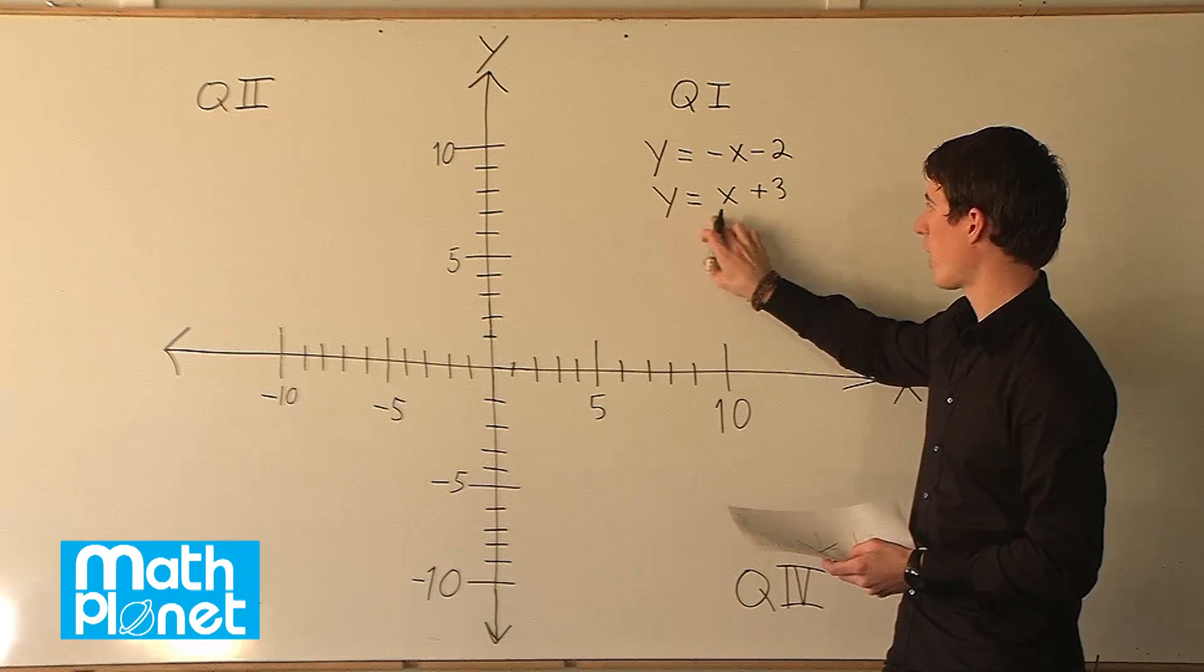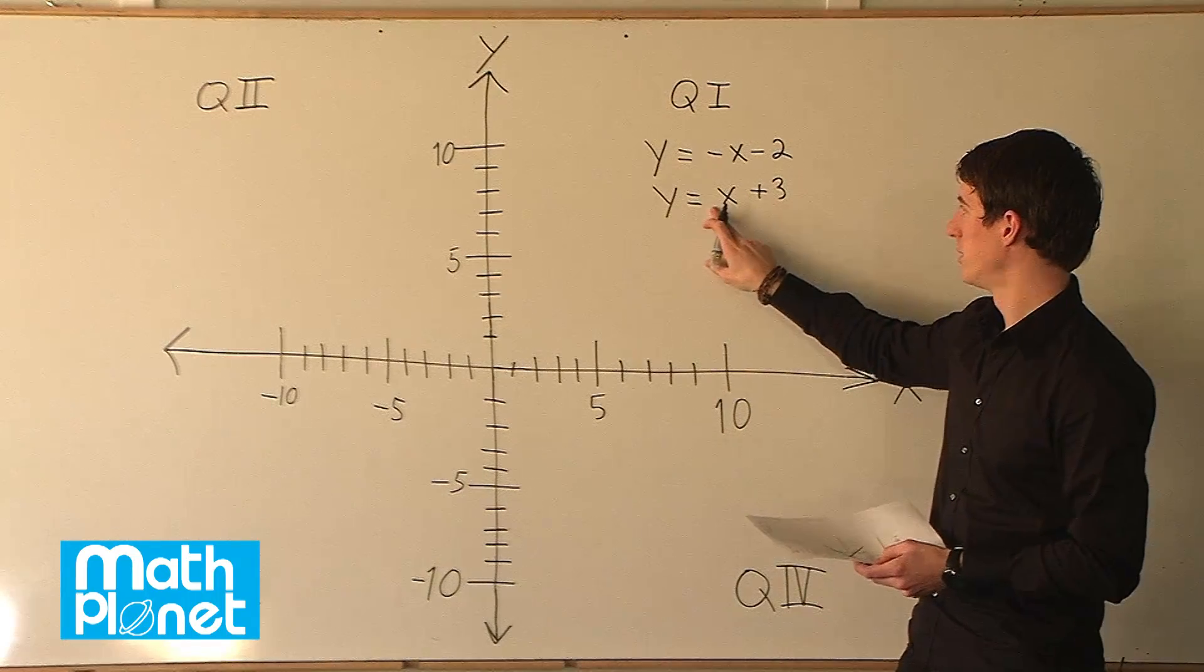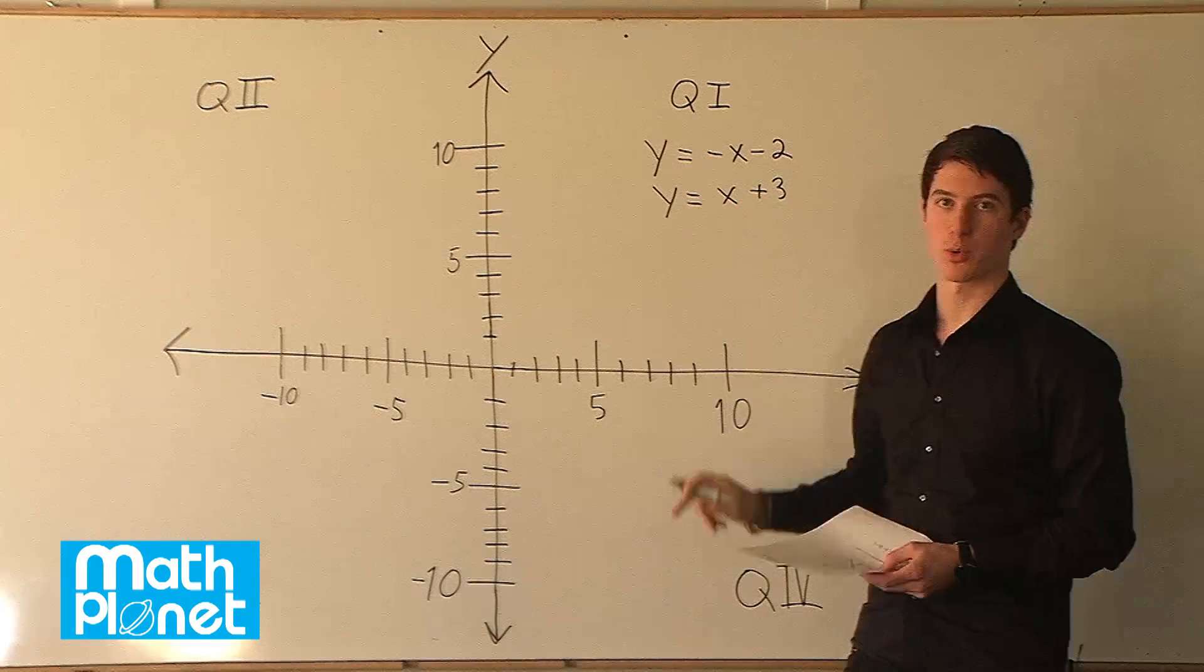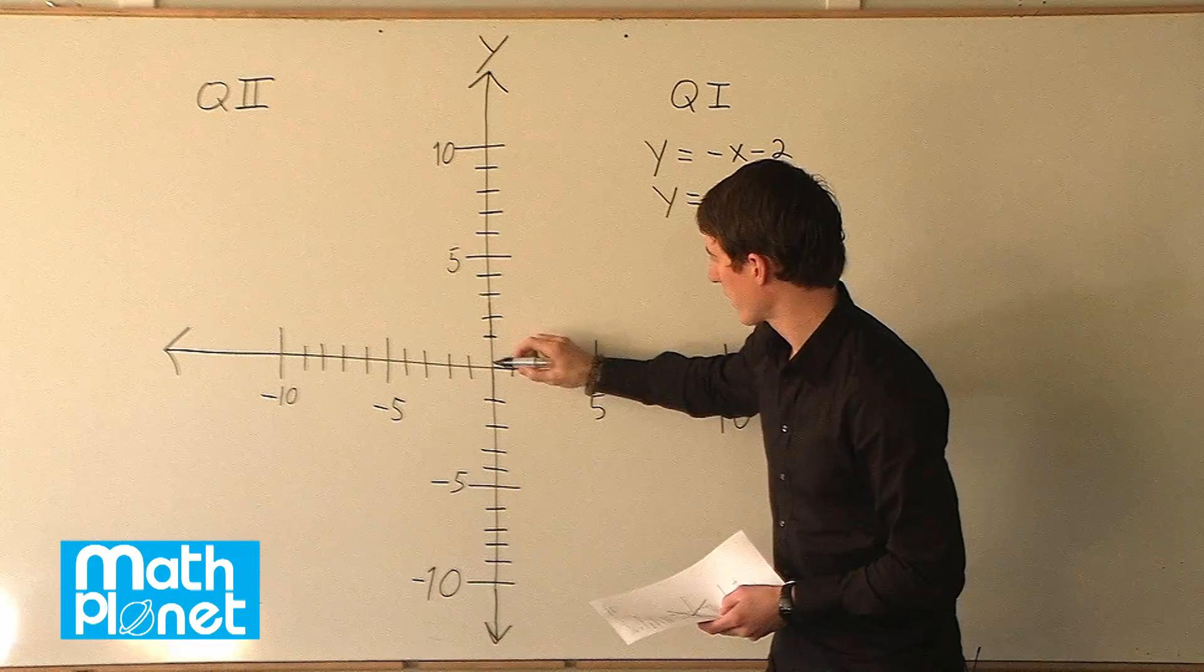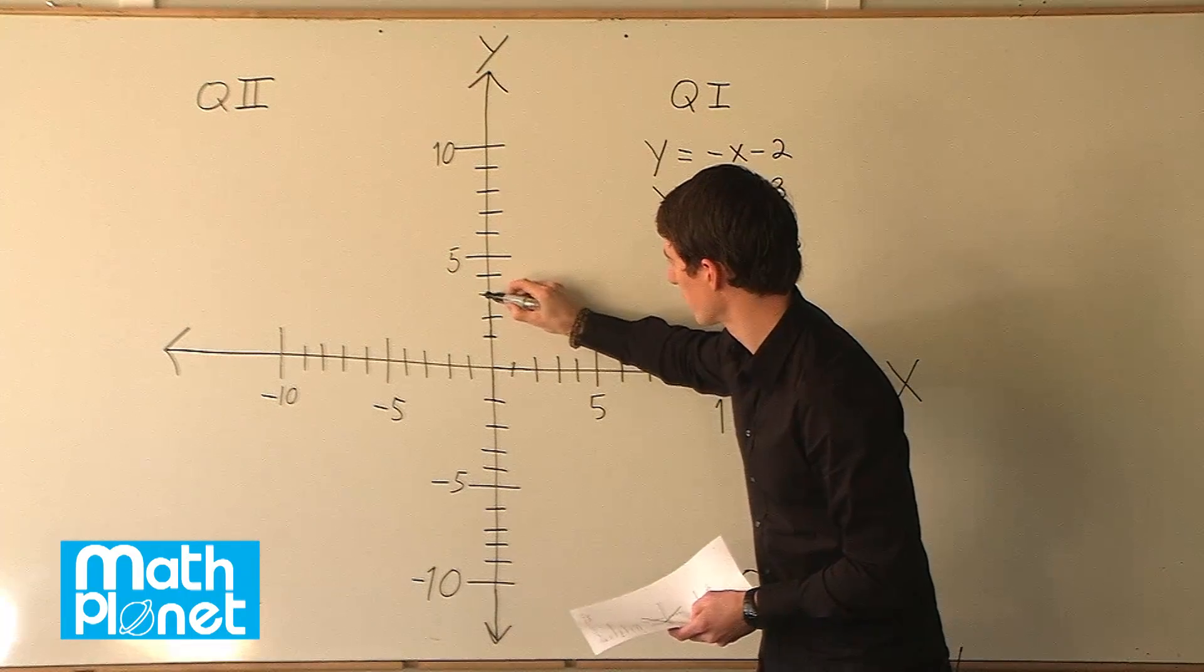Let's begin with this one, y equals x plus three. So the slope is one and the y intercept is three. So we start at x is equal to zero and y is equal to three.